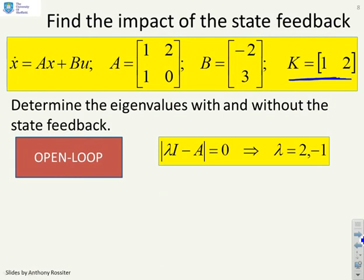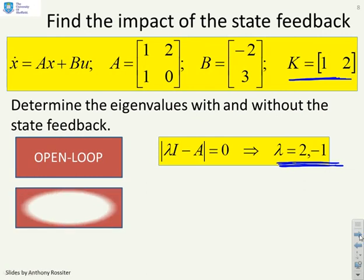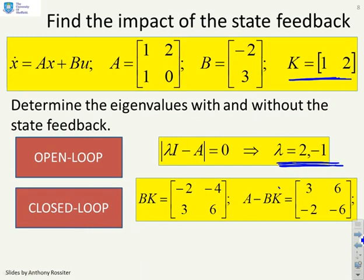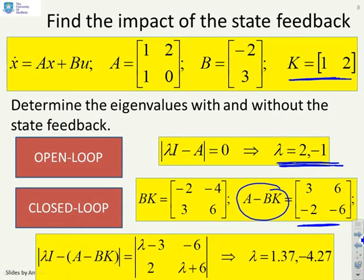You find that you've got open-loop modes at 2 and minus 1. When I close the loop with this state feedback, I find the matrix A minus BK, and that's given here as [36, -2; -6], and the closed-loop eigenvalues are 1.37 and -4.27.